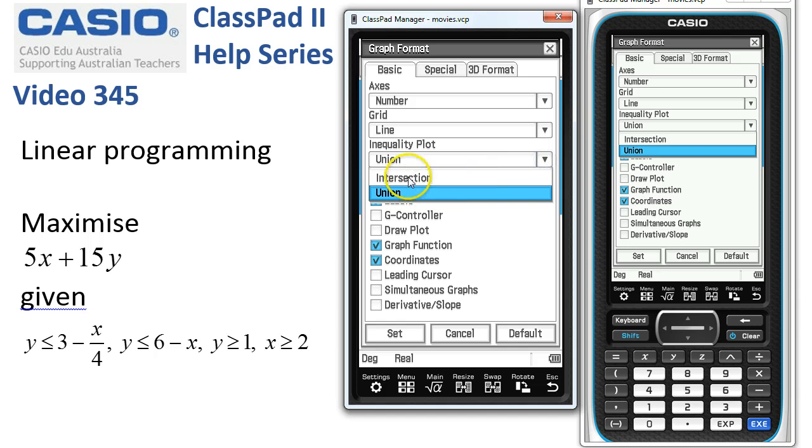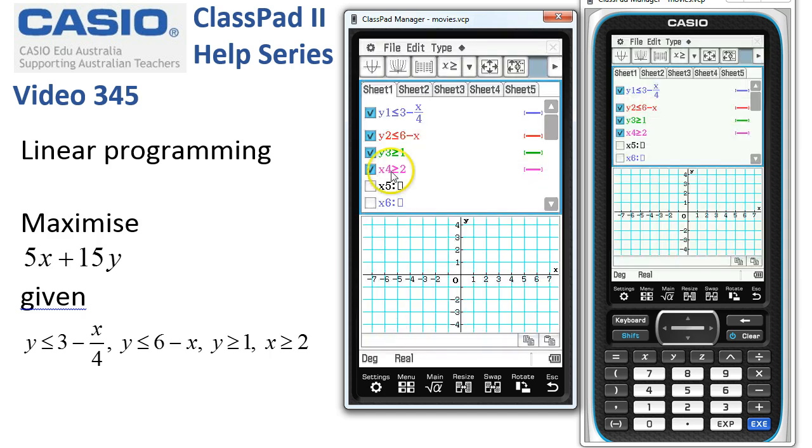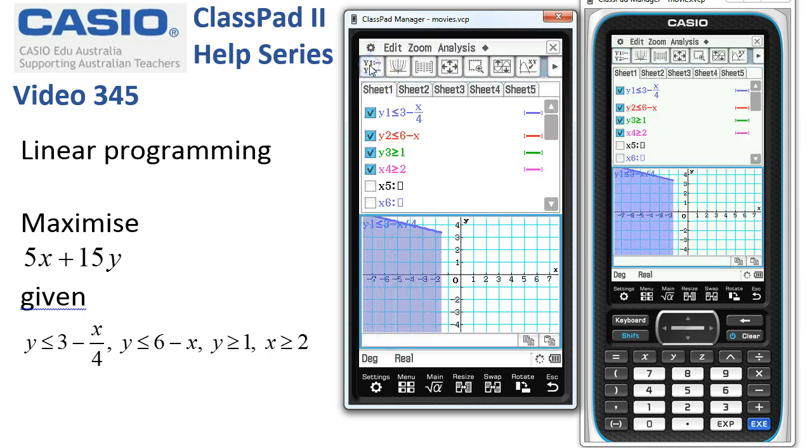Now we actually just want the intersection of these regions rather than all of the regions. So first we're going to change that, tap set, and then we'll draw our inequalities.